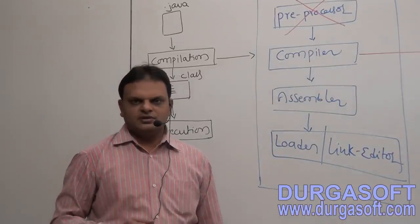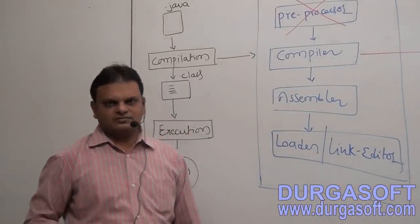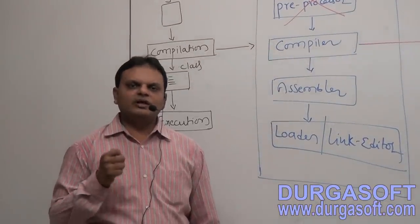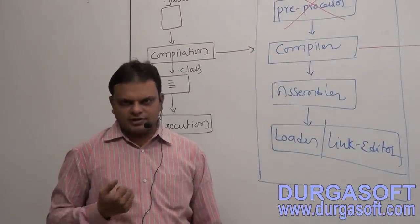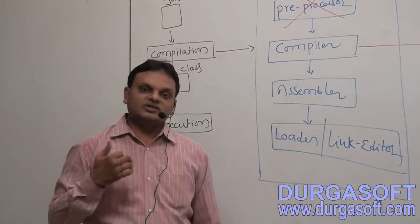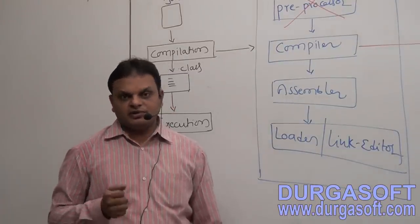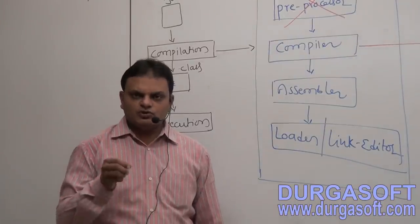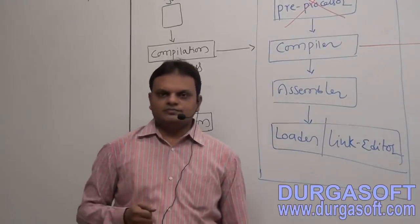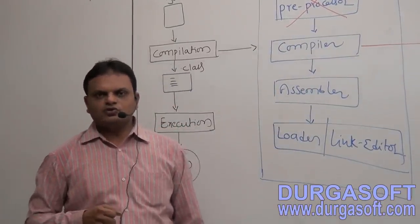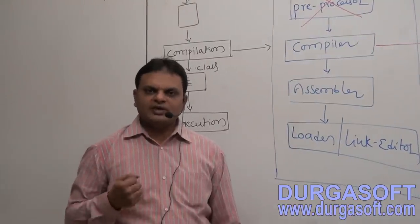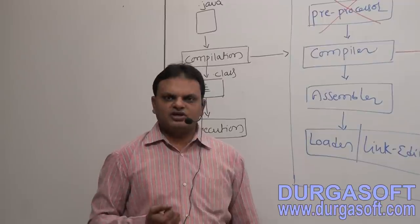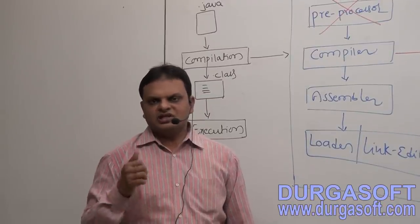One more question arises: before JDK 5.0 version, we were able to use XML documents for Java programs to bring metadata up to runtime of our application and to access that metadata programmatically. So what is the requirement to go for annotations?